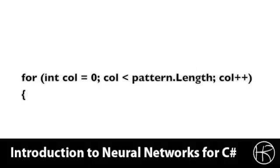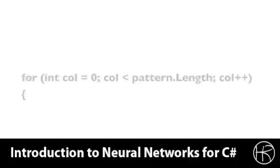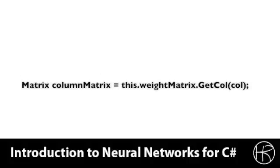Next, we want to loop over every one of the input neurons, which corresponds to a number in the pattern. This algorithm corresponds to the algorithm we learned for recalling patterns from a Hopfield neural network in the first part of this course. The for loop will loop over every single element in the input array. Next, we obtain a column matrix for the specified neuron that we're currently working on. This will be the connection between that neuron and all of the other neurons that this input neuron is connected to.